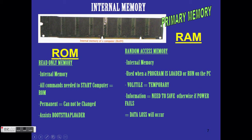ROM — read only memory — is internal. It contains all commands needed to start the computer. It is permanent, meaning you cannot change it, and it assists the bootstrap loader in starting the computer. RAM — random access memory — is the space that can be accessed at random.